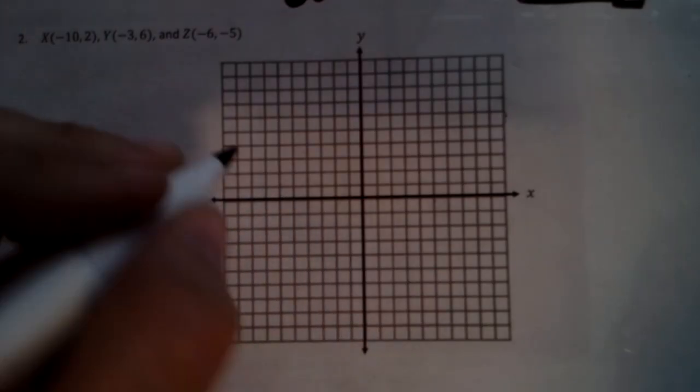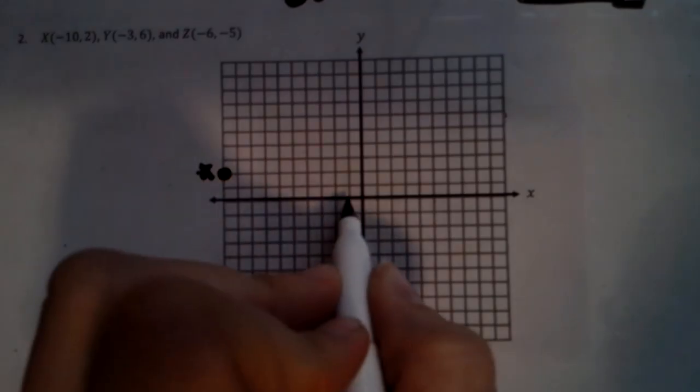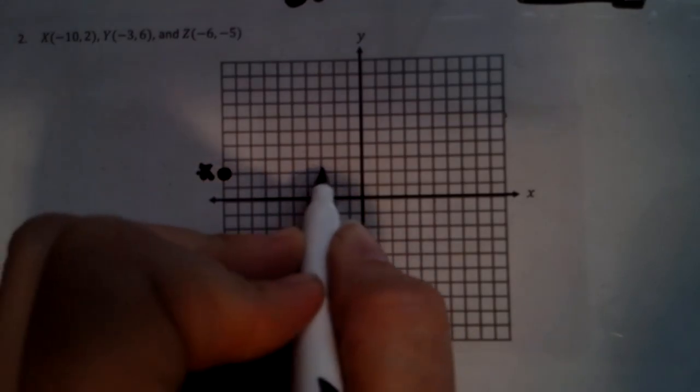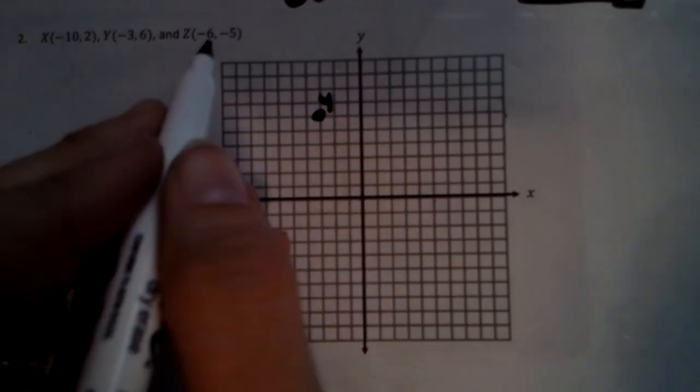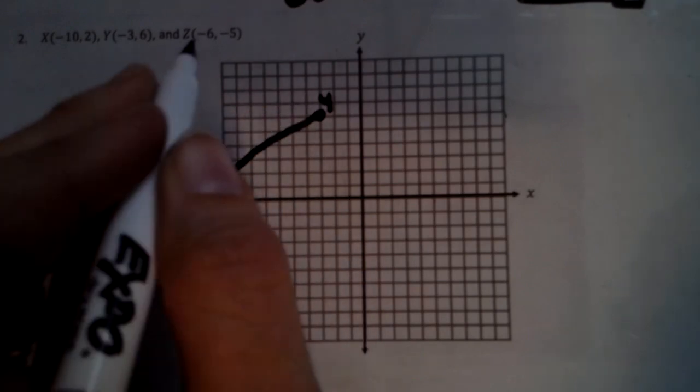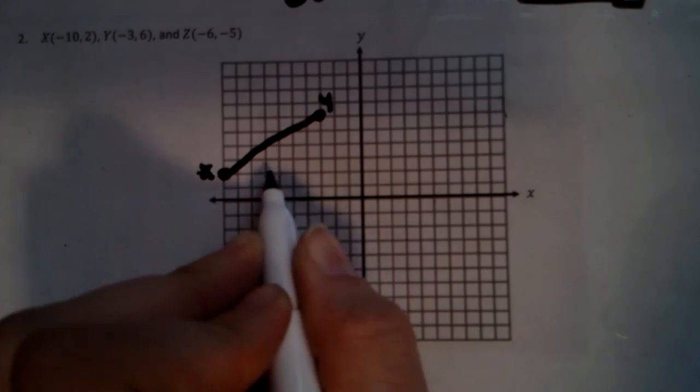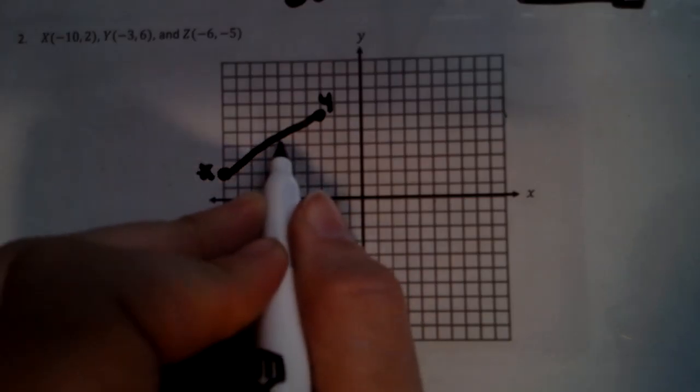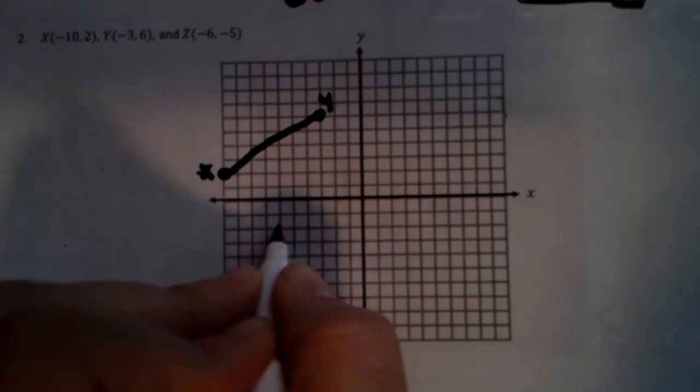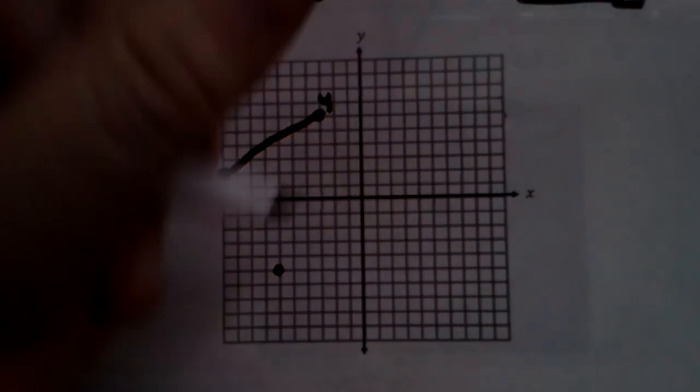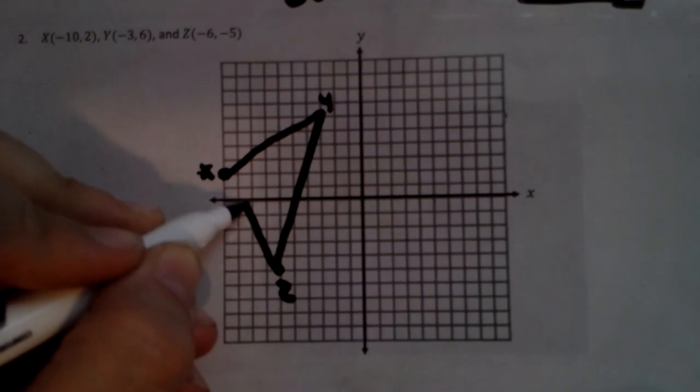All right, all right, kind of weigh down my doc cam because it's too white. All right, so negative 10, positive 2, that's my x. Negative 1, negative 2, negative 3, up 1, 2, 3, this is y. We're doing a triangle here, we're doing a triangle here. And Z, negative 1, 2, 3, 4, 5, 6, up 1, 2, 3, 4, oh down sorry. I was going to say that'd be one weird looking triangle.